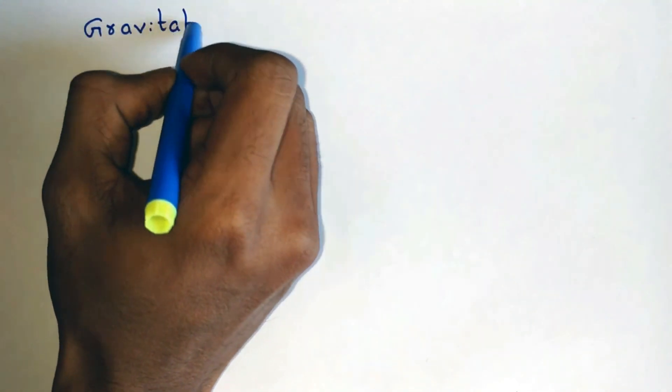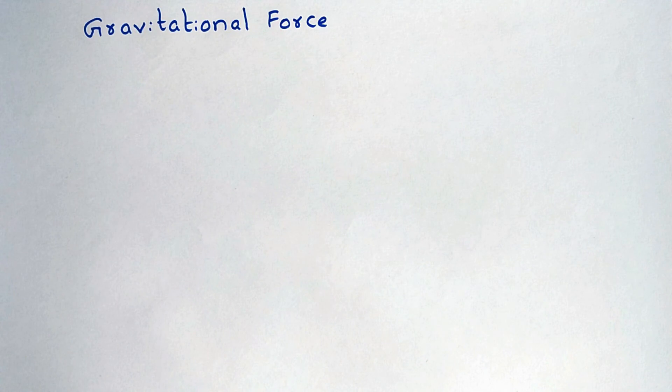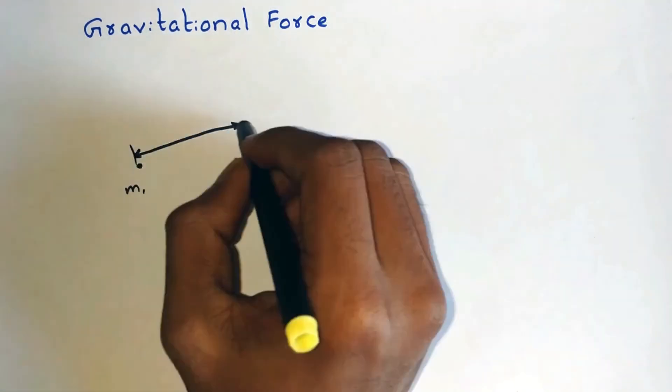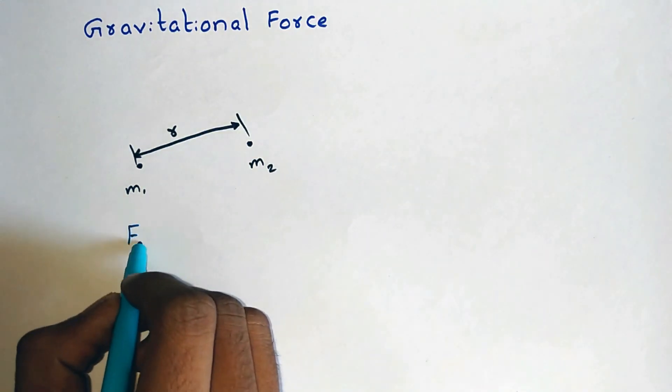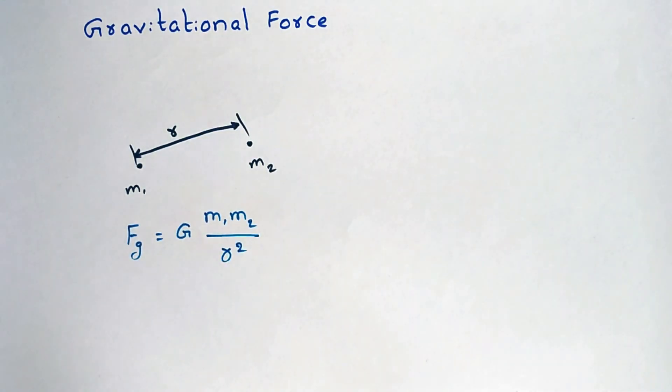So let's begin with the gravitational force. It is a force of attraction which acts between any two masses which are separated by a distance. Let's say there are two masses m1 and m2 which are separated by a center distance of r. Then the two masses feel a gravitational force of G times m1 m2 by r square towards each other.